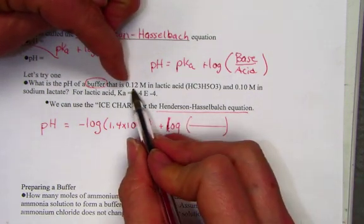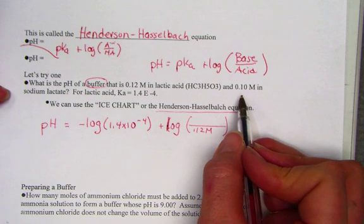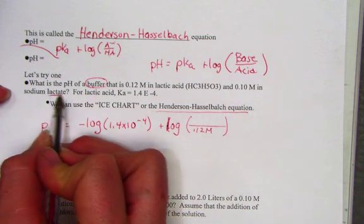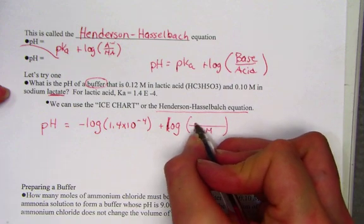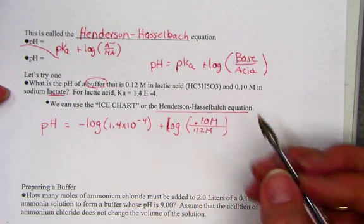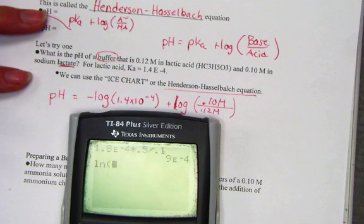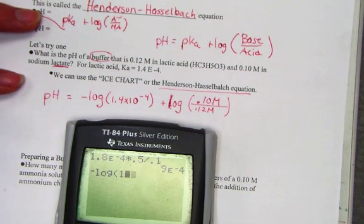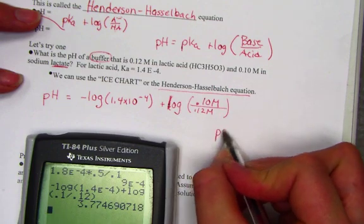The acid is given to us as 0.12 molar. Its conjugate base is given to us in terms of its salt, sodium lactate. Notice the common ion is the negative name. Lactate is the salt from the lactic acid ion, and its concentration was 0.10 molar. We just simply hit, and I'll grab my calculator, negative log of 1.4 E negative 4 plus the log of 0.1 divided by 0.12. And when I hit that, I get the pH directly as 3.77 pH units.